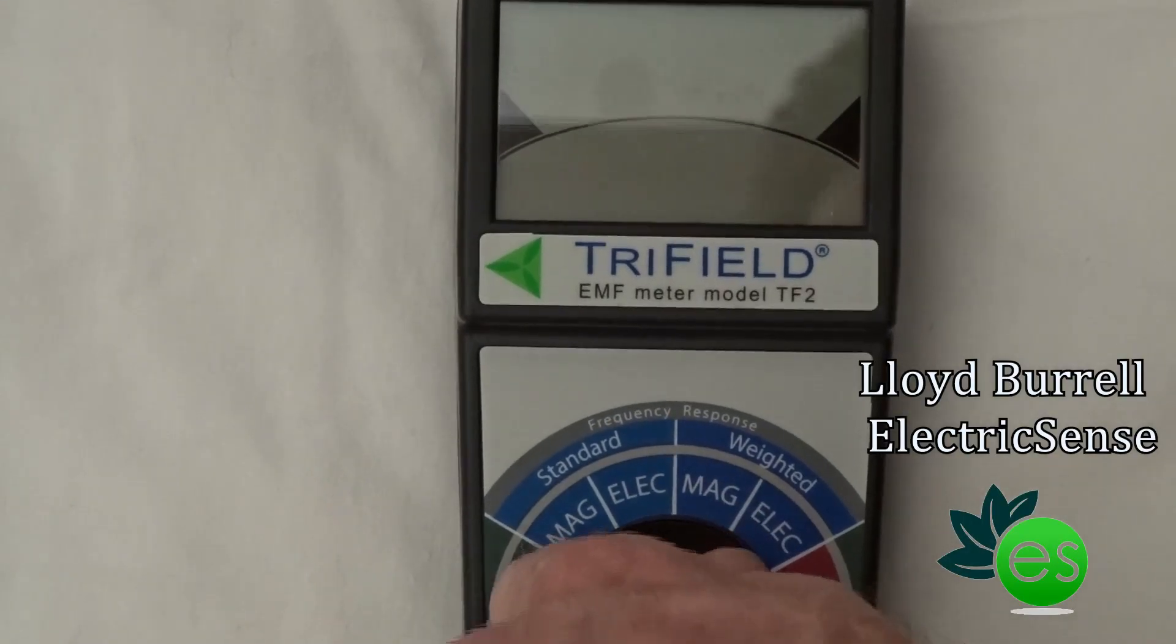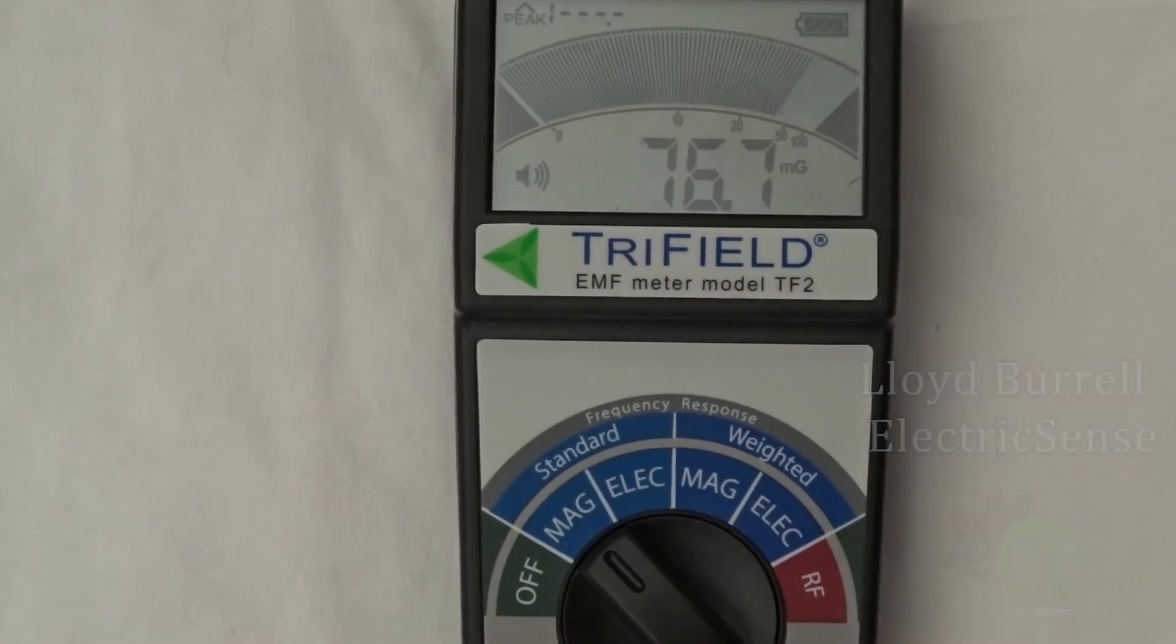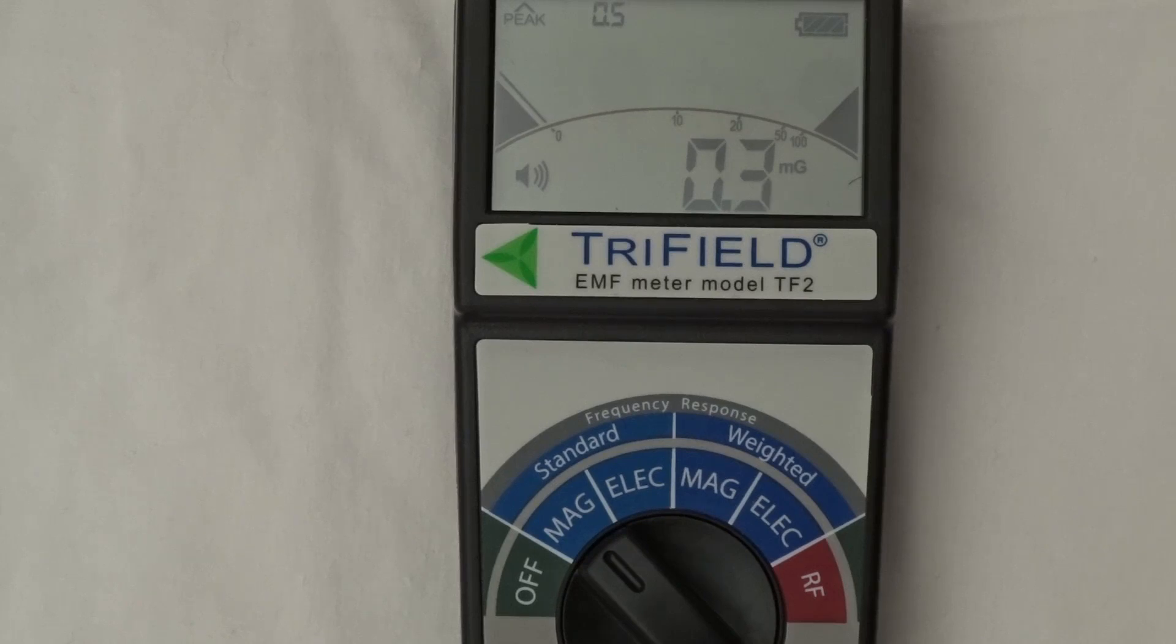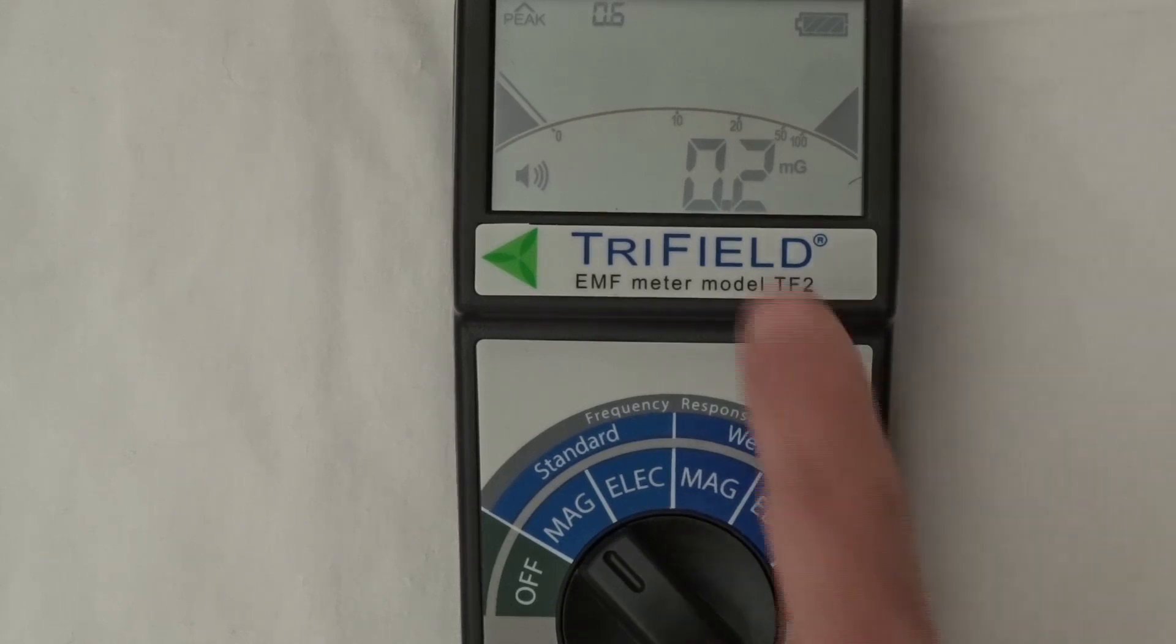I'll move the selector switch to MAG to measure the magnetic fields. The LCD display comes to life. The big digits at the bottom tell us the current field measurement reading for magnetic fields, which is shown in MG or mini Gauss.